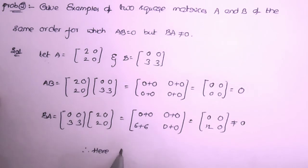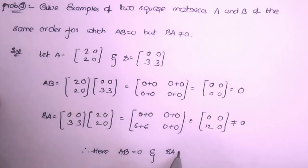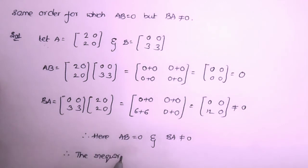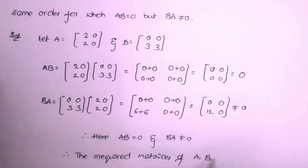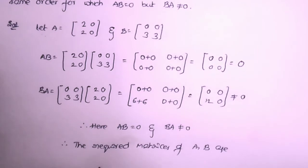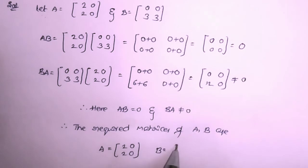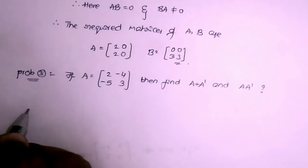Therefore, the required matrices are A = [[2,2],[0,0]] and B = [[0,0],[3,3]], which satisfy AB = 0 but BA ≠ 0. That is the answer.